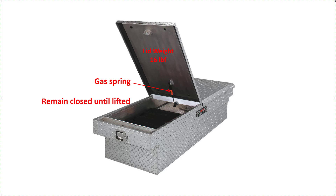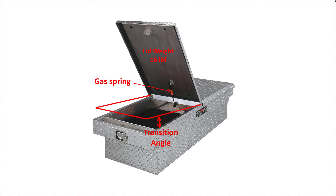Therefore, we want to position the gas spring so that the leverages are such that there will be a transition angle — a sweet spot if you will — where any smaller angle will allow gravity to keep the lid closed and any larger angle will allow the gas spring to overcome and keep the lid open.